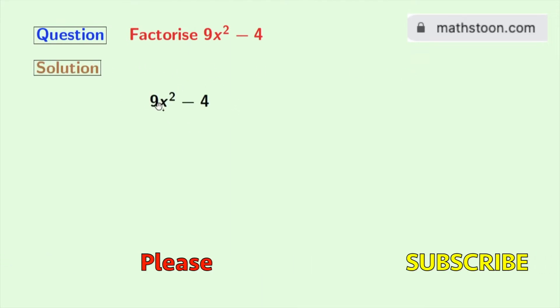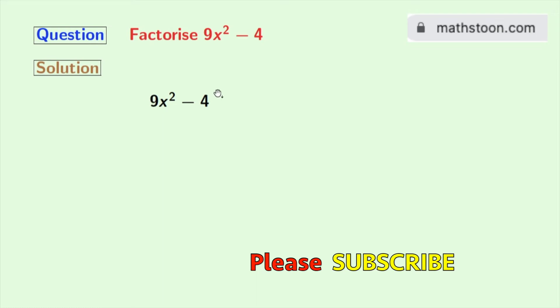This is our given expression. Now we will express each of these terms in the form of a square. Doing that we get (3x)² - (2)². Now look at this, it is in the form of a² - b².